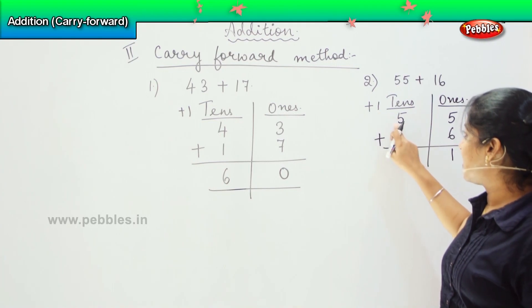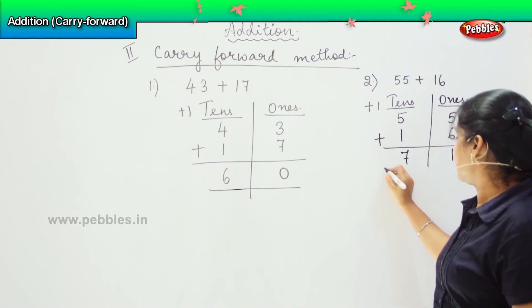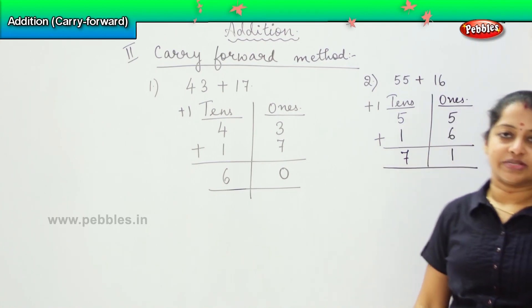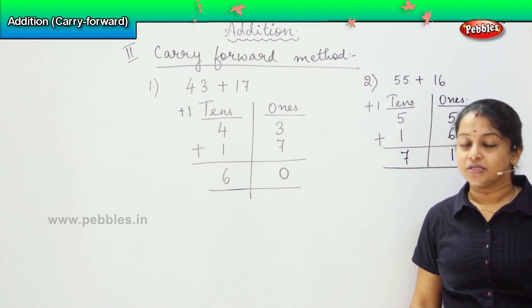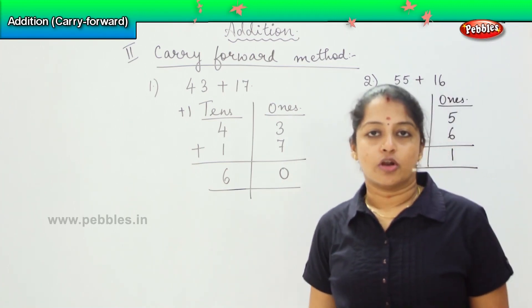So 1 plus 5 is 6, 6 plus 1 is 7. So my answer is 71. So compared to the previous method, this method is more simple to solve.